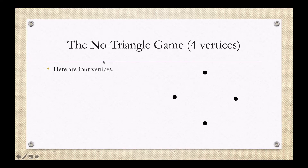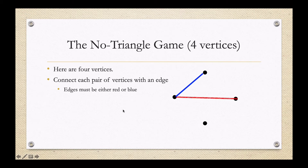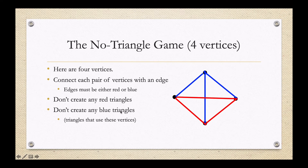We're going to start out with a game I'll call the no triangle game on four vertices. We have four vertices, and the whole point of the game is to make sure you don't have any triangles. You take the vertices and connect every pair with an edge — that edge either has to be red or blue, two different colors. The key thing is you want to make sure you don't create any red triangles or any blue triangles.